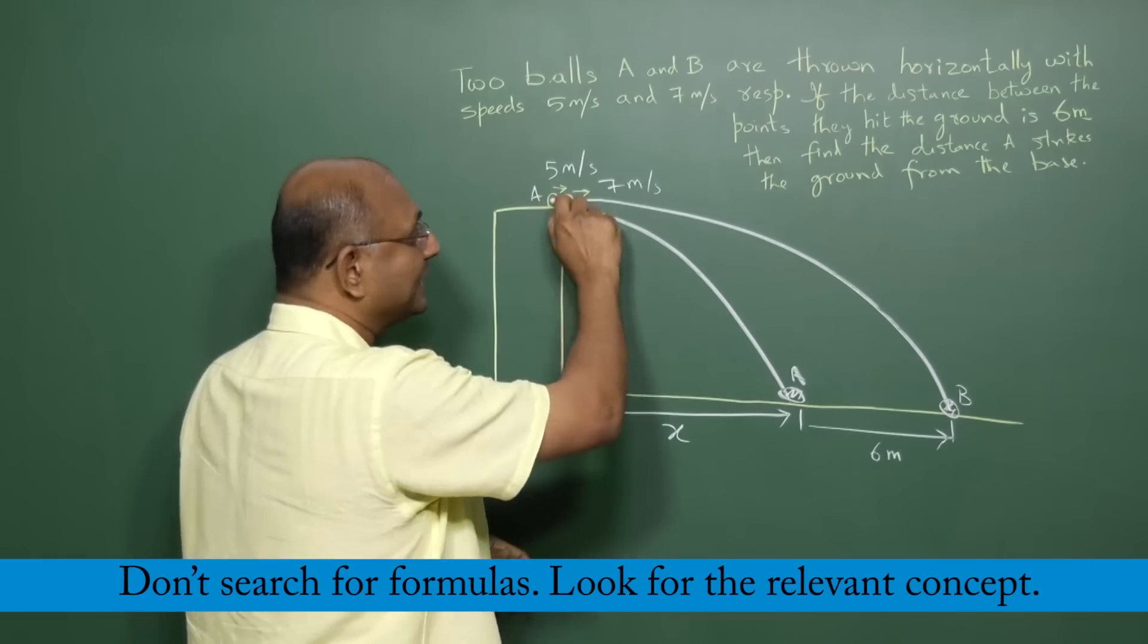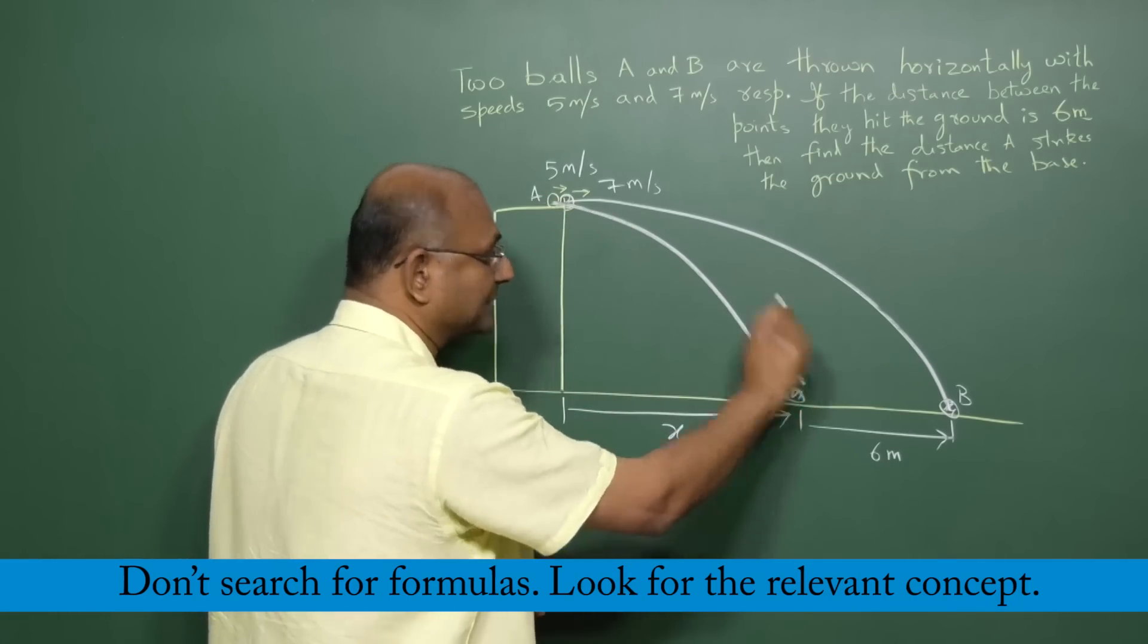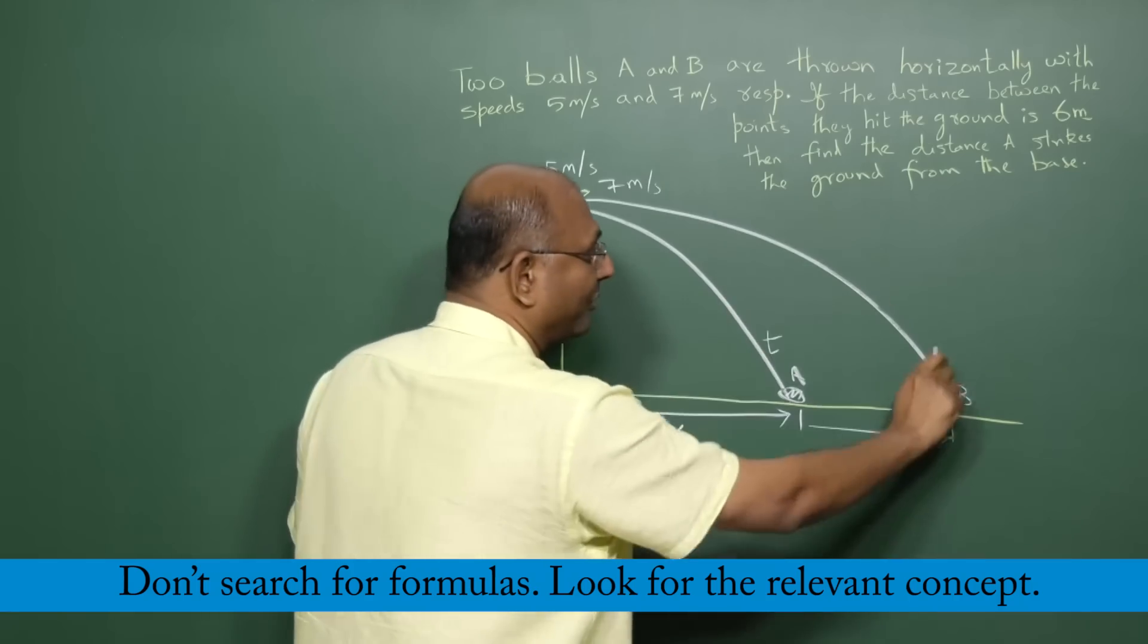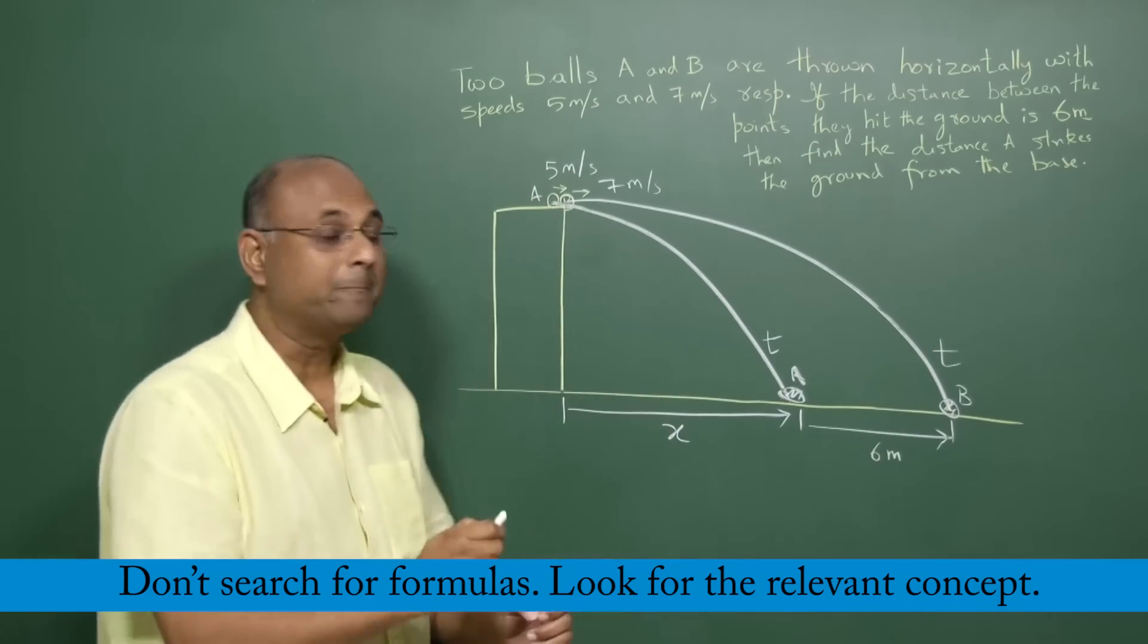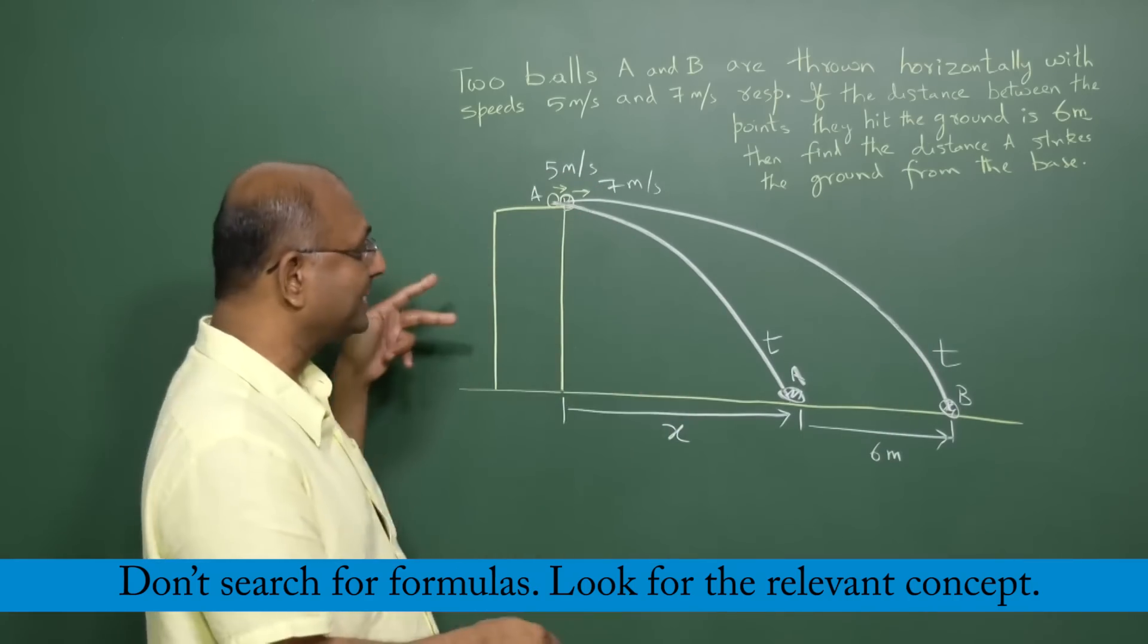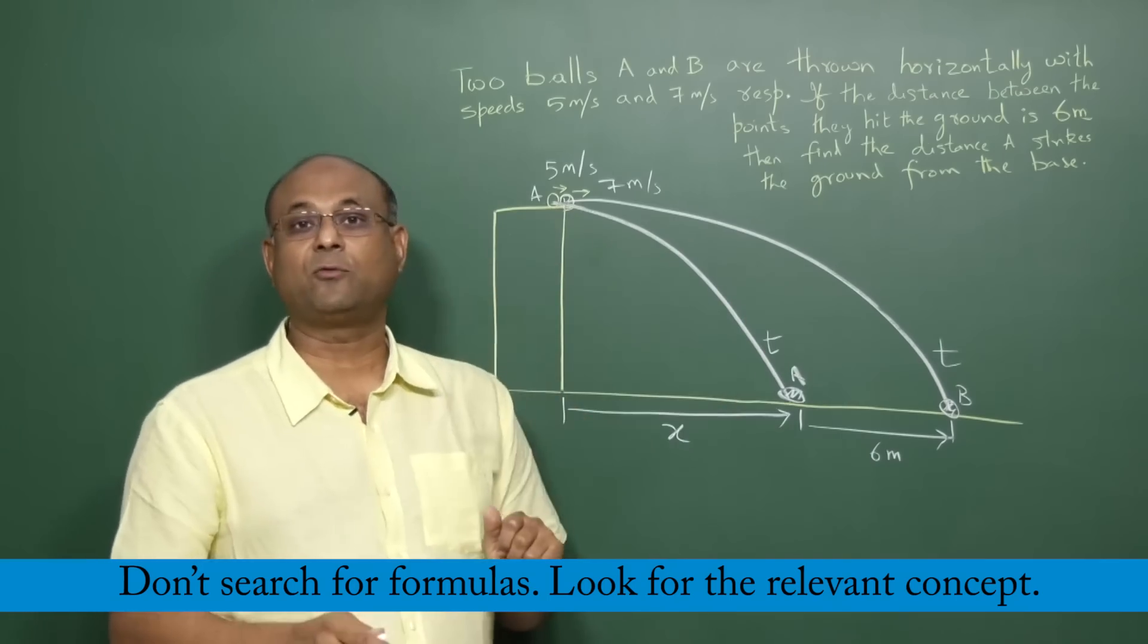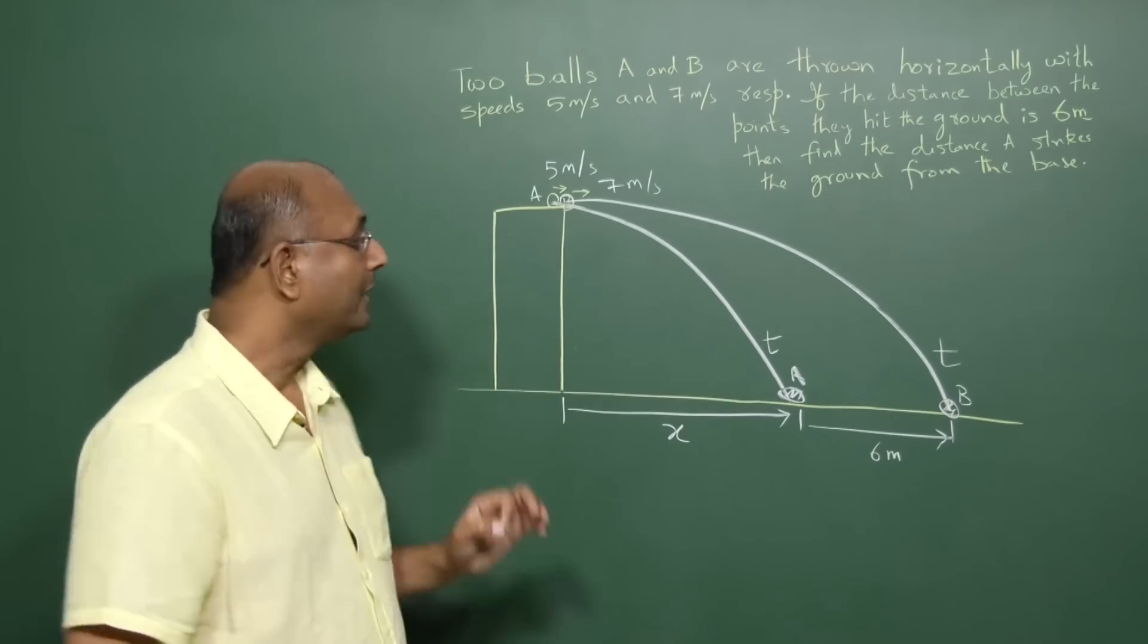The time of fall for this ball and the time of fall for that ball is the same. Though they have different horizontal velocities, the time that they take to fall is exactly the same.